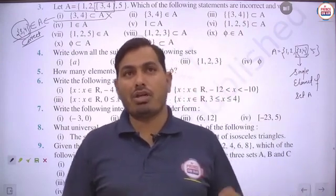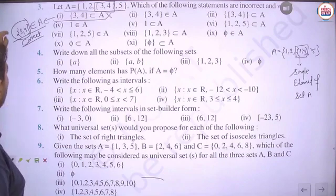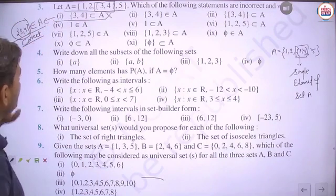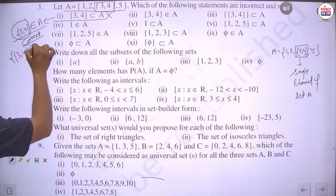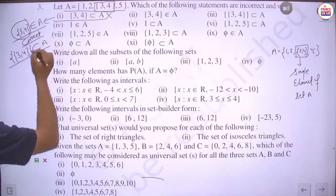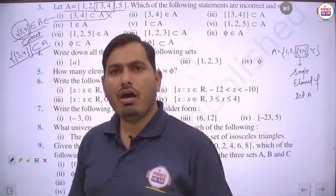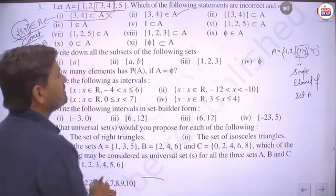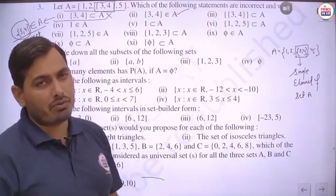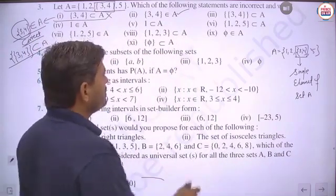For the first part, {3,4} ⊆ A: since {3,4} is a single element of A, we should use 'belongs to,' not 'subset.' Writing {3,4} ∈ A is correct. Using the subset symbol here is incorrect because {3,4} is an element, not a subset.